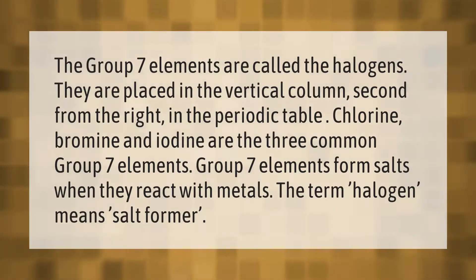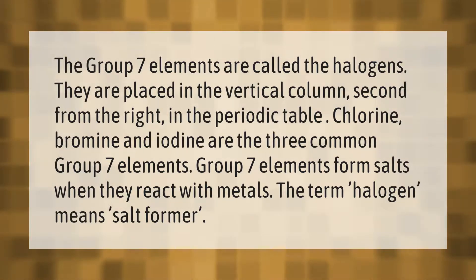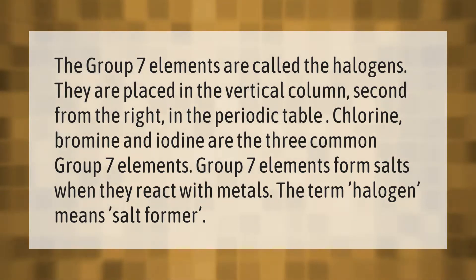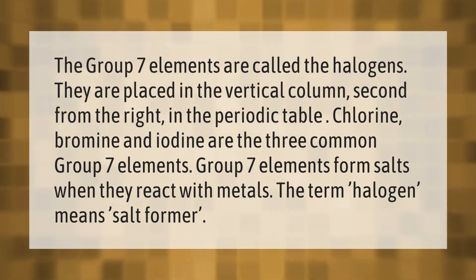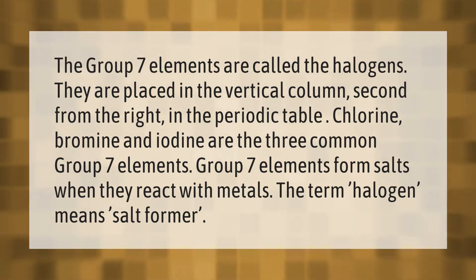The group 7 elements are called the halogens. They are placed in the vertical column second from the right in the periodic table. Chlorine, bromine, and iodine are the three common group 7 elements. Group 7 elements form salts when they react with metals; the term halogen means salt former.